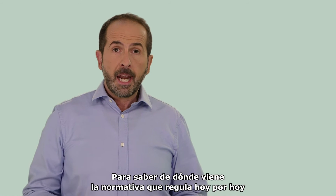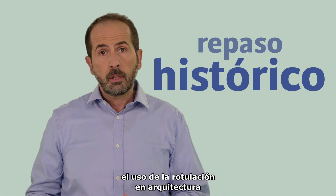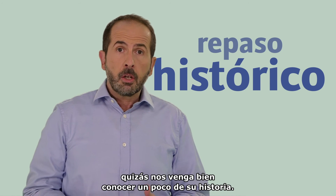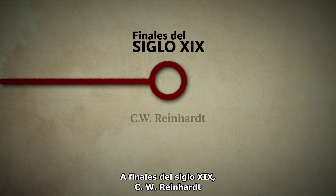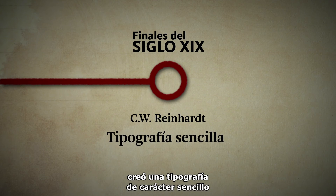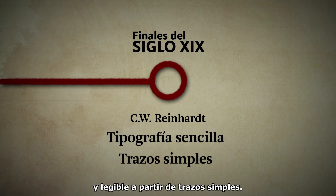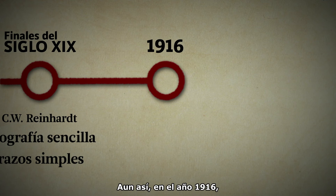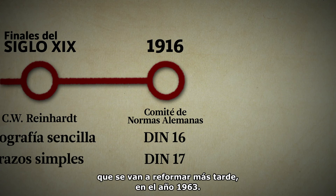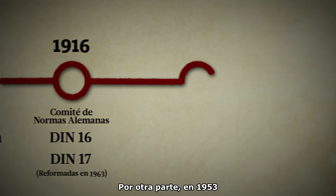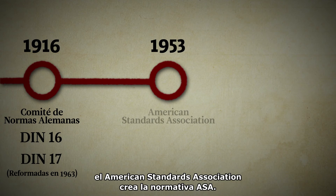To understand where the current regulations governing the use of labeling in architecture come from, it may help to know a bit of its history. At the end of the 19th century, C.W. Reinhardt created a simple and legible typography based on simple strokes. Even so, in 1916, the German Standards Committee created the DIN 16 and DIN 17 standards, which were later reformed in 1963. On the other hand, in 1953, the American Standard Association created the ASA standard.